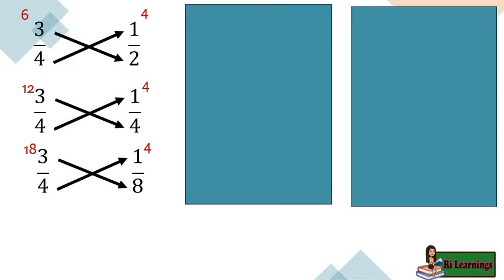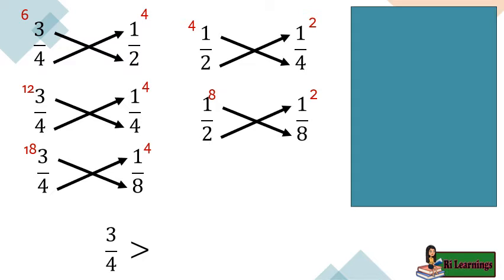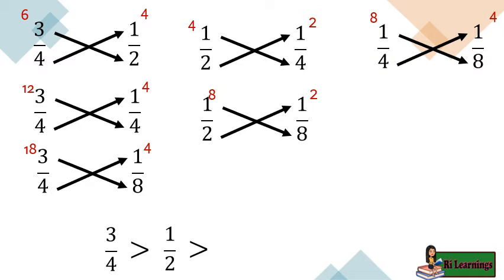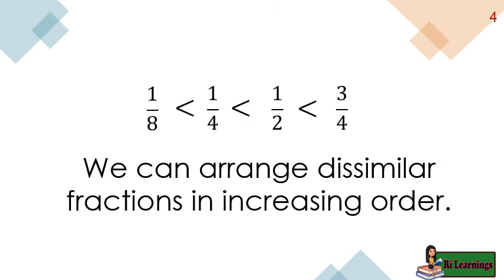Using the cross-multiplication technique, we determined that three-fourths is greater than one-half, one-fourth, and one-eighth. Using cross-multiplication on one-half compared to one-fourth and one-eighth, we determined that one-half is greater than one-fourth and one-eighth. Comparing the last two fractions, we determined that one-fourth is greater than one-eighth. Therefore, we can arrange these dissimilar fractions in increasing order.